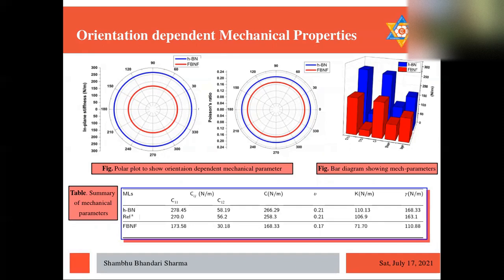And we see there the reference which is experimental data. We are very close to the experimental data that confirms our methodology is correct. And we see all the parameters for F-h-BN is reduced, especially for mechanical parameters.